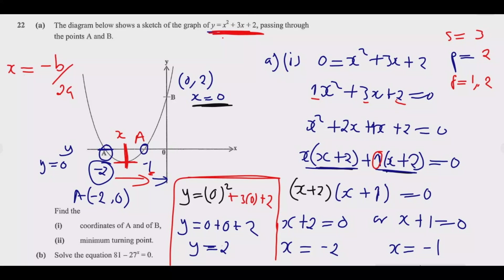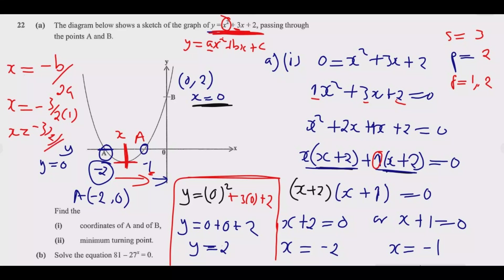Using the formula: for a quadratic y = ax² + bx + c, the x-coordinate of the turning point is x = -b / (2a). In our equation, b = 3 and a = 1, so x = -3 / (2 × 1) = -3/2. Once we have this x-value, we substitute it back into the equation to find the y-value.